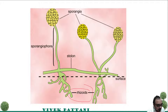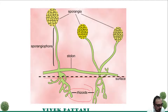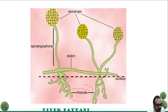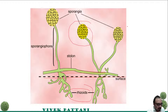The rhizoids basically penetrate a surface and are connected with a stolon. The diagram given here is of a spore.